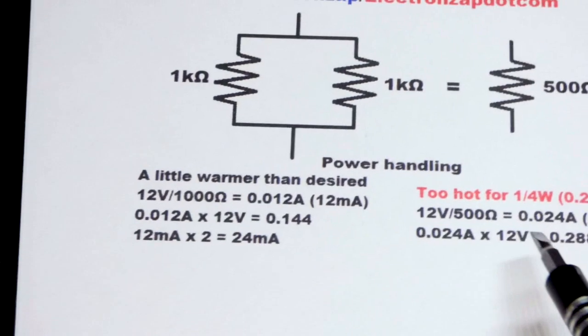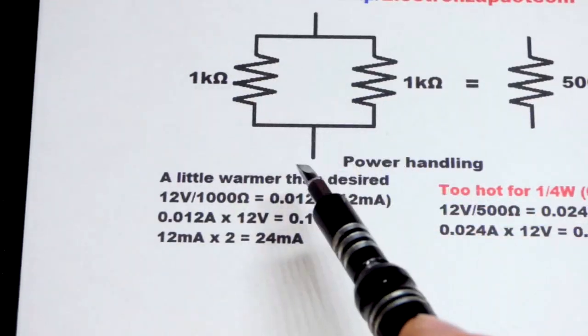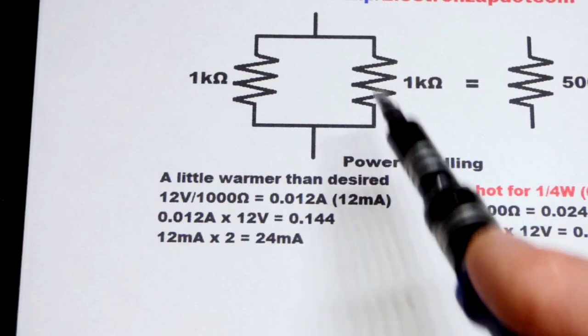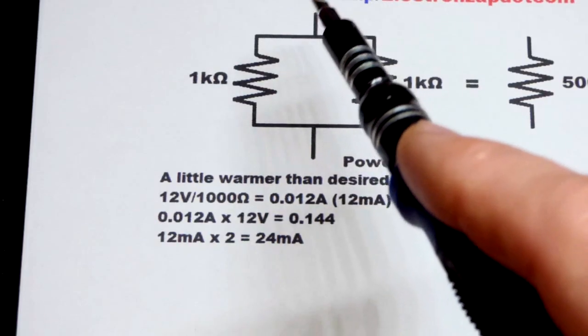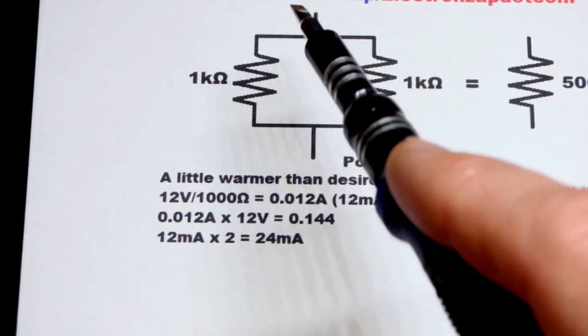I already said we want 24 milliamps of current, but we can get 12 milliamps through one resistor and then we can put another one kiloohm resistor in parallel with it. We'll also get 12 milliamps of current through the other resistor.